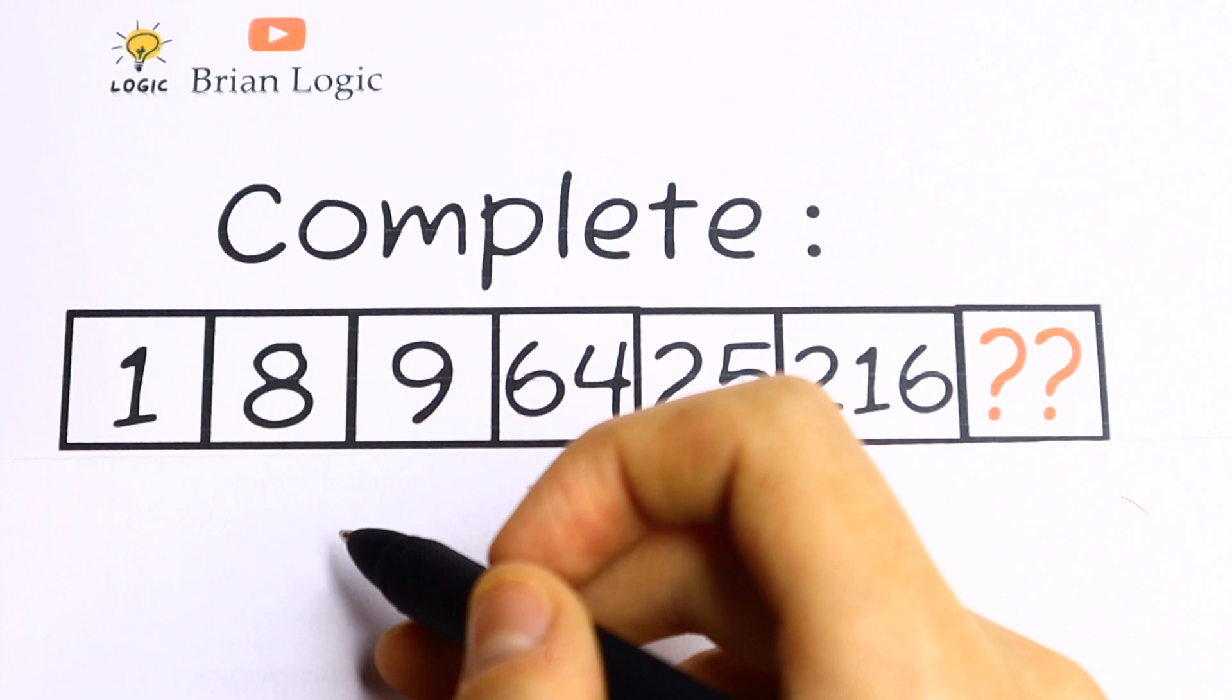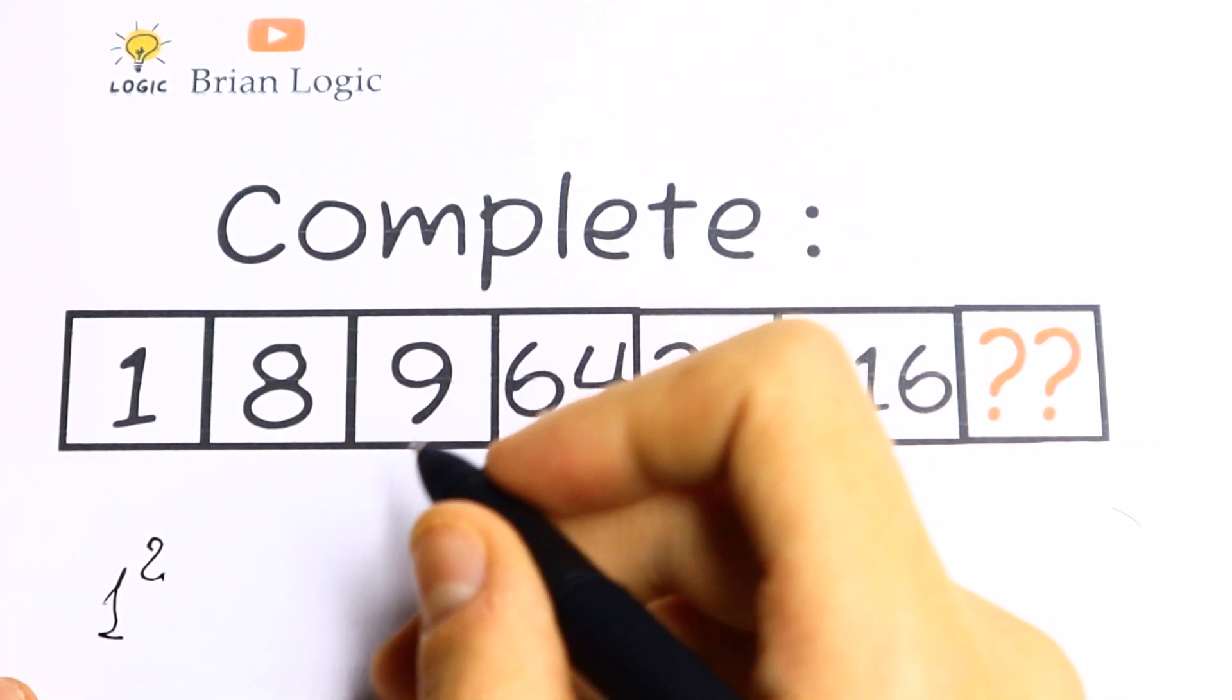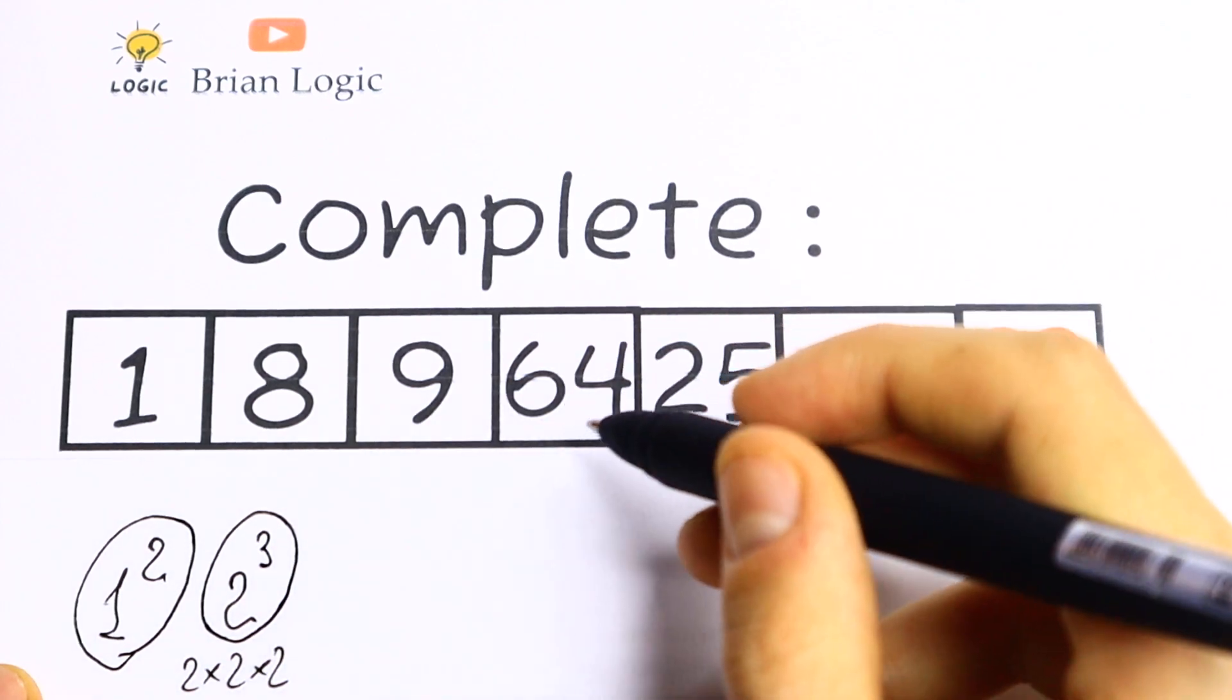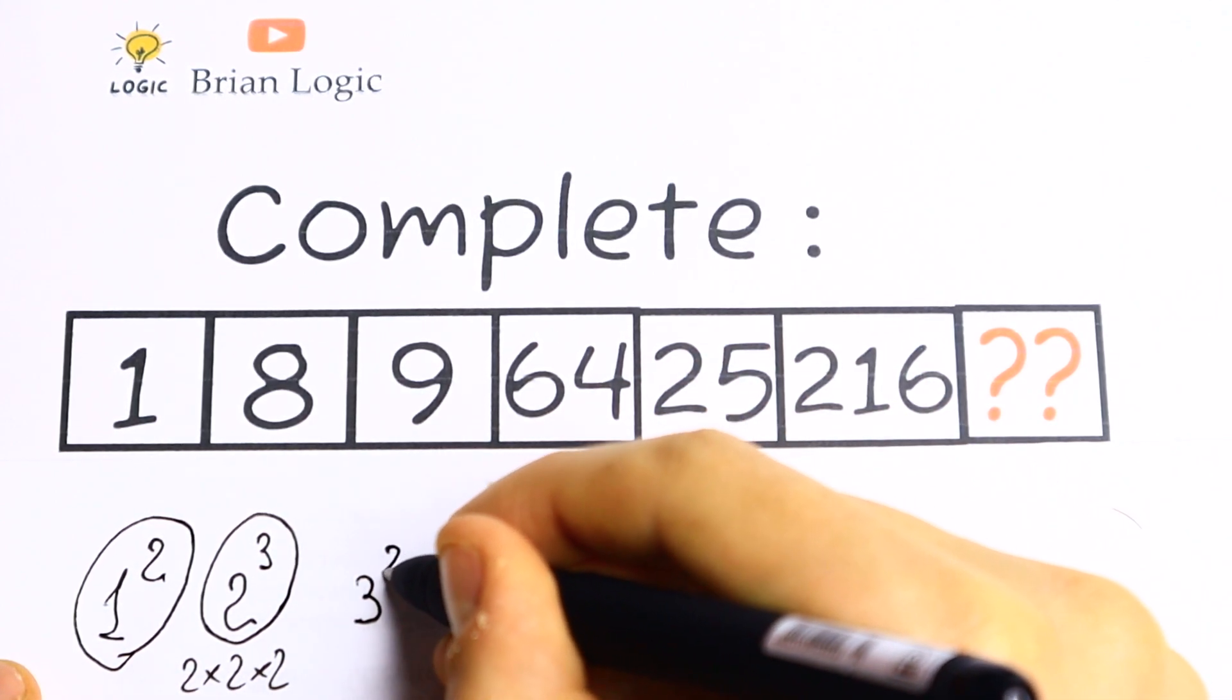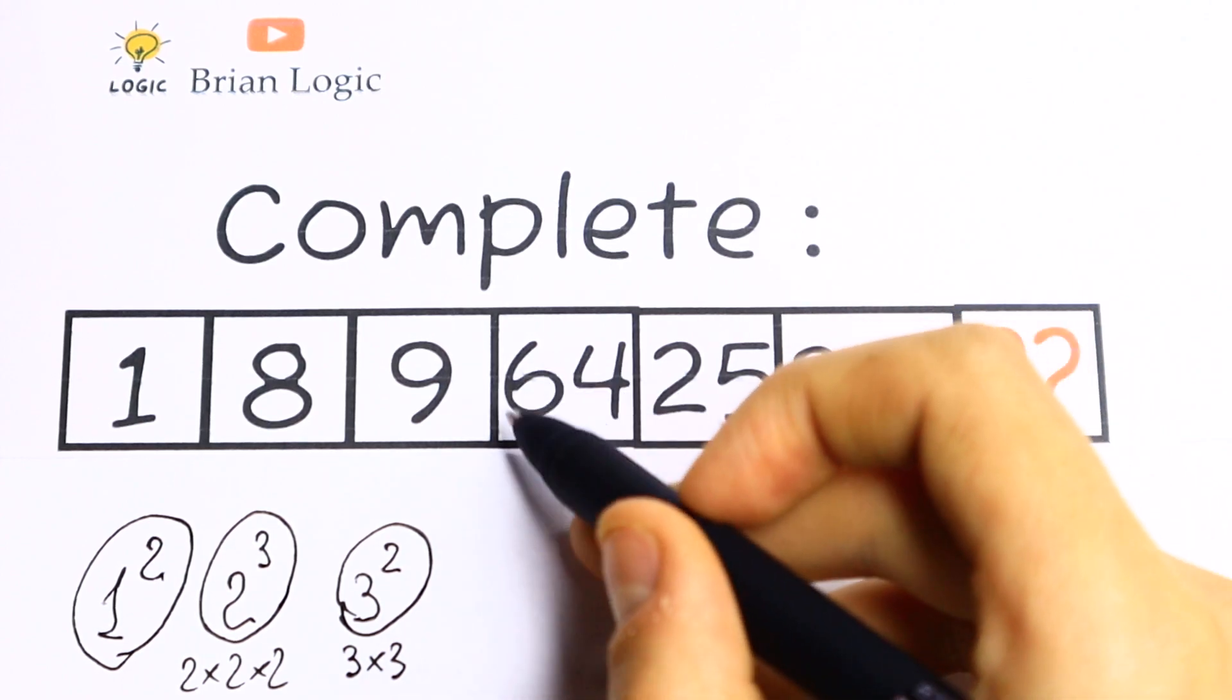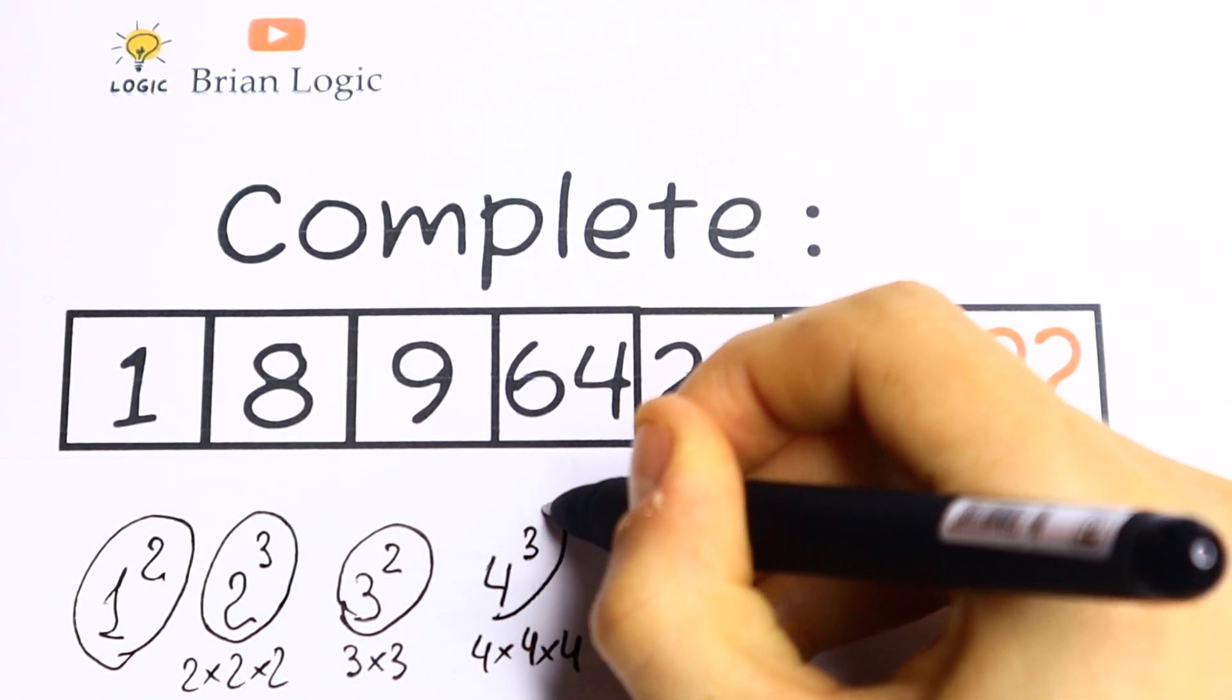Take a look. I see that this one can be written as 1 squared. Let's write this 8 using 2, because this is like an order: 1, 2, 3, 4. Let's write 8 as 2 cubed, because 2 times 2 times 2. This 9, let's write with 3. This 9 can be written as 3 squared, because 3 times 3 equals 9. We have a really good order: 1, 2, 3, and we have some powers. Let's express 64 using 4. So 64 equals 4 cubed, because 4 times 4 times 4 is 64.